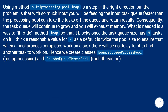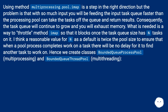Using multiprocessing.Pool.imap is a step in the right direction, but with so much input you will be feeding the input task queue faster than the processing pool can consume tasks, causing the task queue to grow and exhaust memory. What is needed is a way to throttle imap so that it blocks once the task queue reaches N tasks. A reasonable default for N is twice the pool size, ensuring no delay for pool processes finding new work. Hence we create classes: BoundedPool for multiprocessing and a BoundedPool for multi-threading.